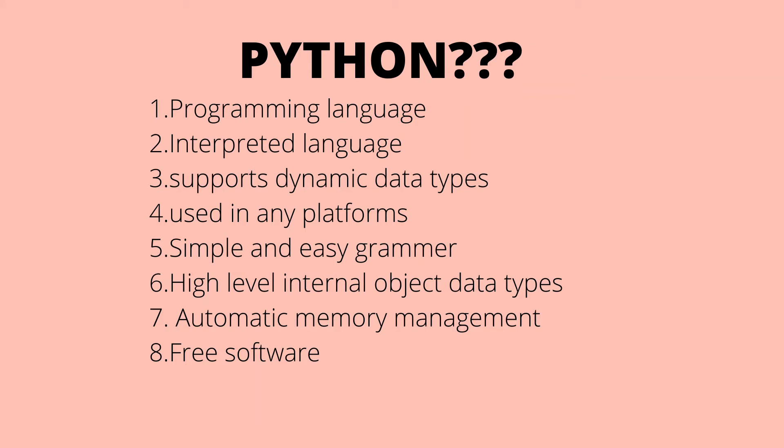Python supports dynamic data types. To understand this, we need to understand the difference between statically typed and dynamically typed programming languages. Statically typed languages do type checking at compile time, while dynamically typed languages do type checking at runtime. For example, a variable x equal to 3 in Python — Python will do its type checking at runtime to determine whether it is an integer, float, or double.